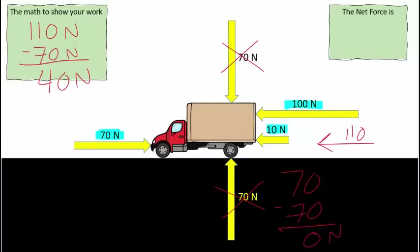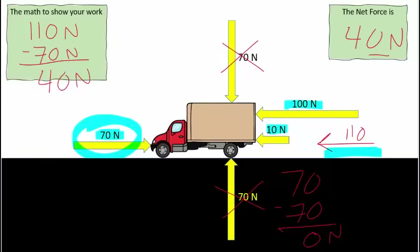So we can just deal with left and right. Pushing in one direction, we have 100 and 10, which totals 110. Pushing the opposite direction, we have 70. So: 110 minus 70 newtons equals 40 newtons. The 110 side wins, so the net force is 40 newtons in that direction. Is that force balanced? It's not zero, so it is an unbalanced force.